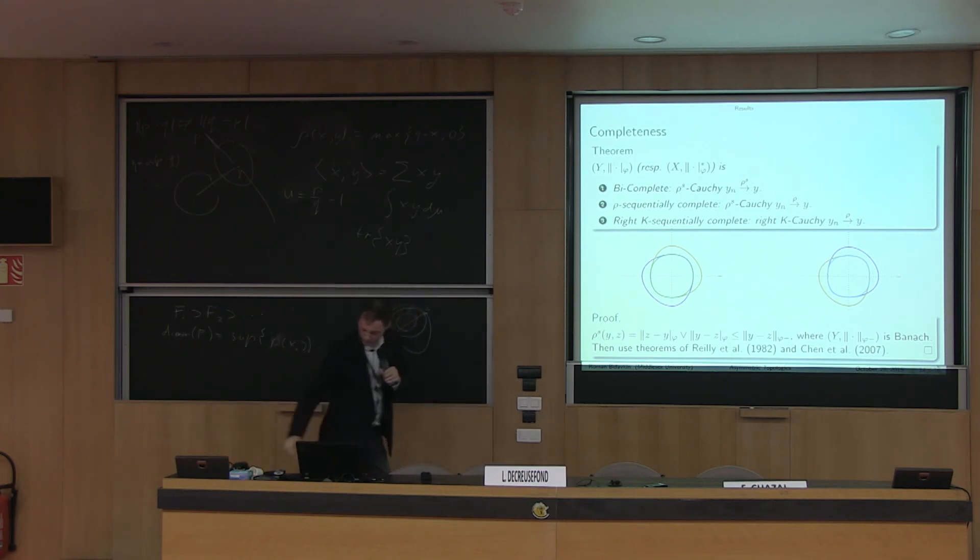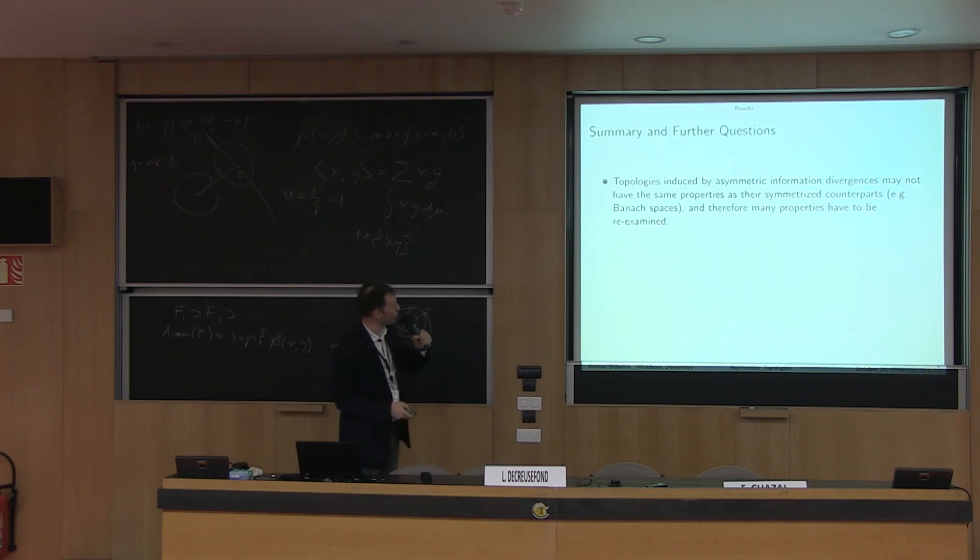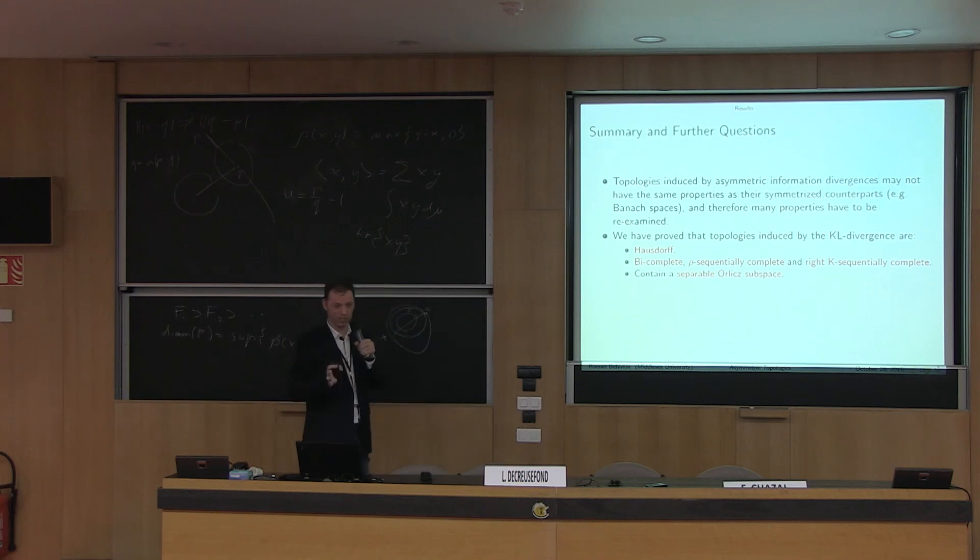A similar property goes for the last property. Basically, just a summary of results: topologies induced by asymmetric information divergences may not have the same properties as their symmetrized counterparts. Therefore, we have to reconsider some of the results, most of the results in fact, if we are interested in the symmetric properties. Here we prove the following properties: K-K divergence induces Hausdorff topology, which is very nice. It is bi-complete, raw sequentially complete, and also right K sequentially complete. In fact, it also contains a separable subspace, although the whole space itself may not be separable.